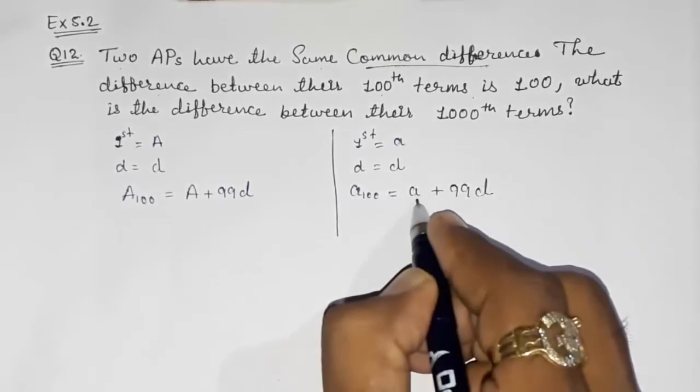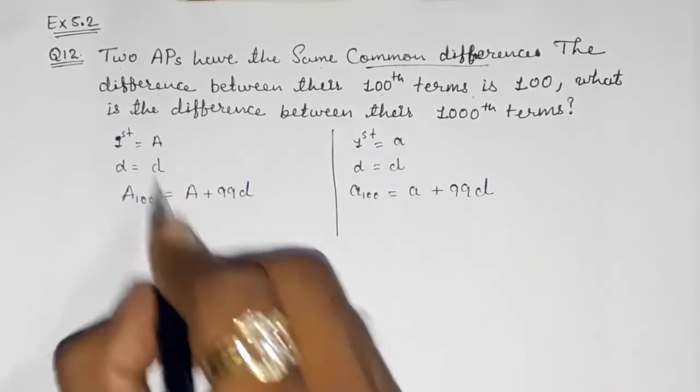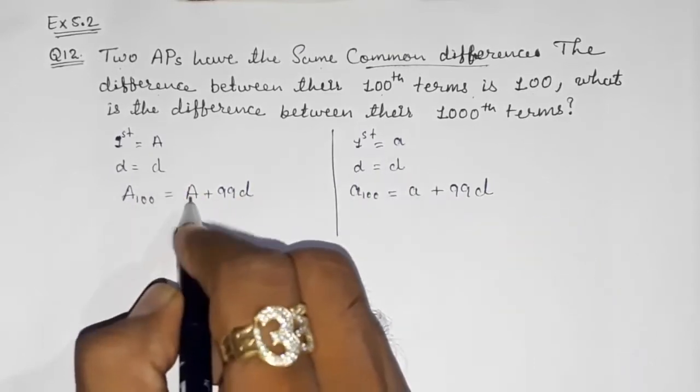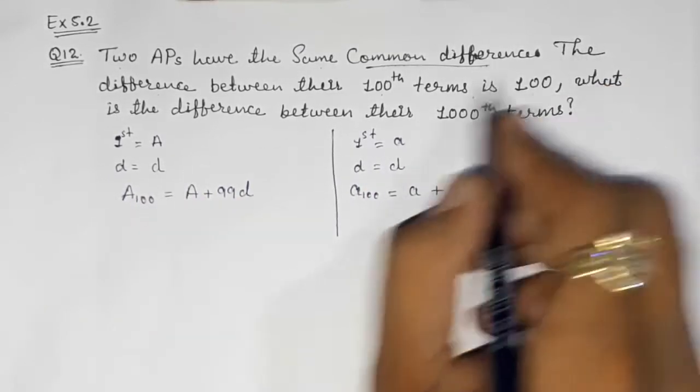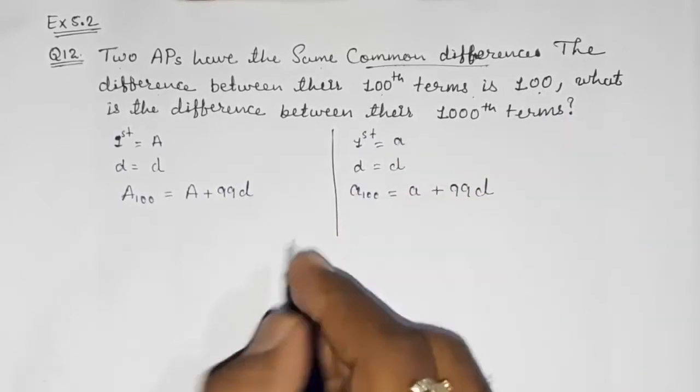And what will be this 100th term? a₁₀₀ is equal to a + 99d. I have taken smaller a here because this was smaller a, and here capital A because this was capital A.